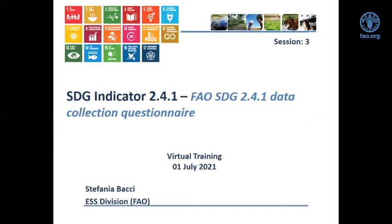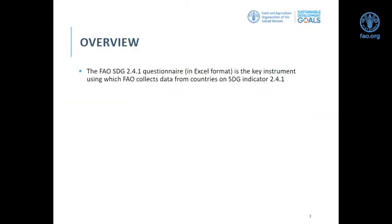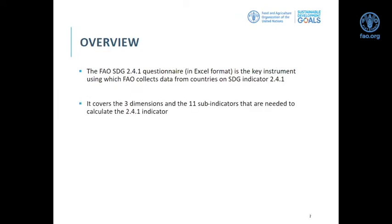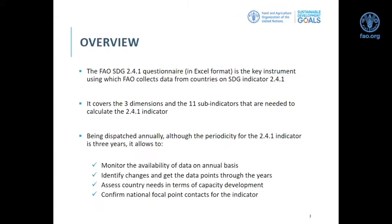Now let's move to another practical part. I will show you how FAO gets data on SDG 2.4.1 from countries — meaning the SDG 2.4.1 questionnaire, which you all received last August and will receive again in the coming months. We have one single questionnaire that comes in Excel format, and it is the key instrument to collect data from countries. It covers all three dimensions and all elements of the indicator.